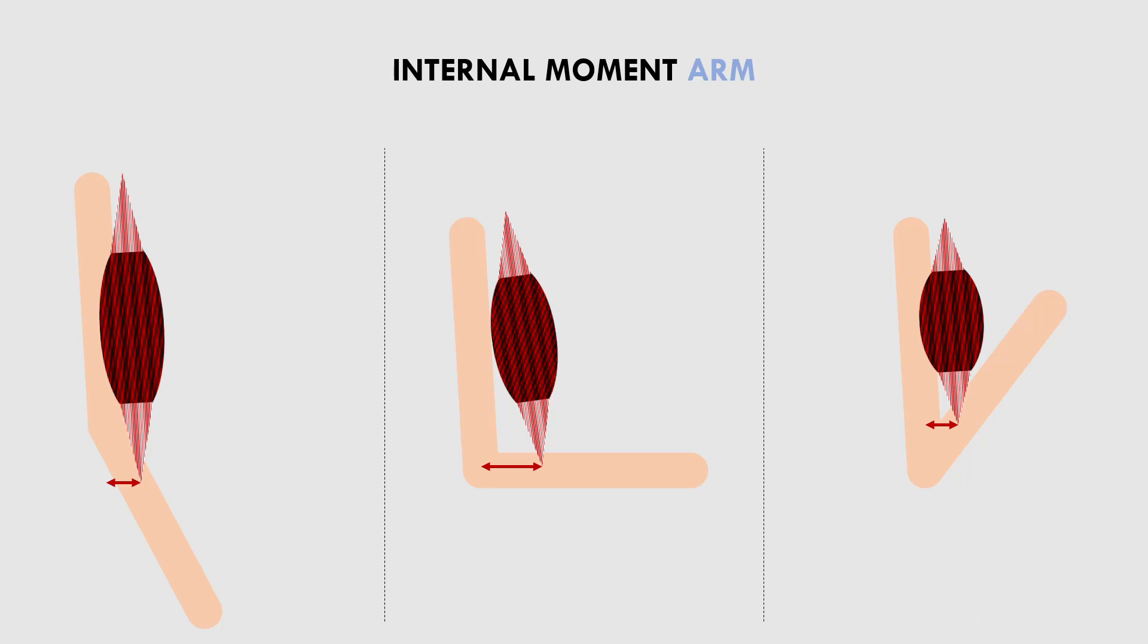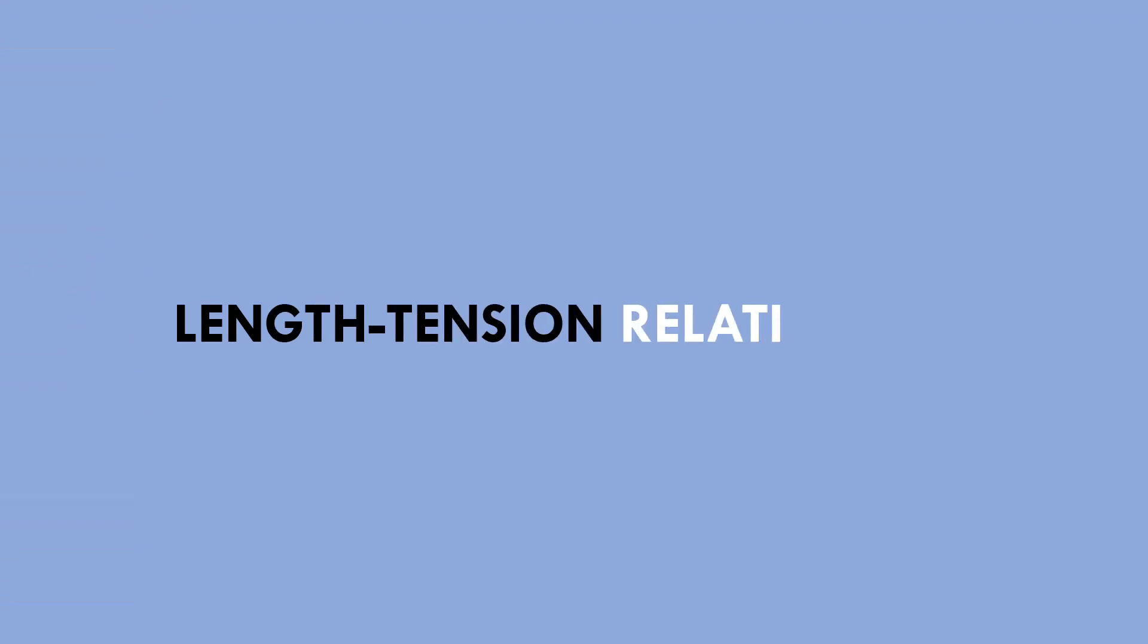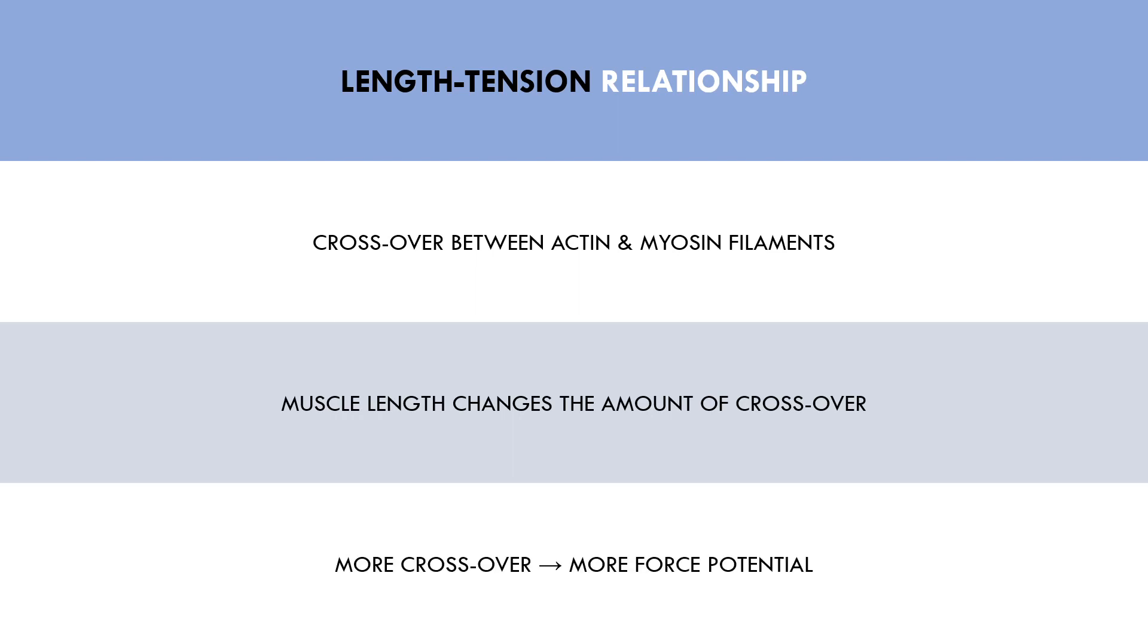And the last primary variable influencing tension curves is the length tension relationship. To summarize this phenomenon briefly, the length tension relationship refers to the crossover between actin and myosin. These are the smallest individual components of muscle which contribute to muscle contraction. The length of the muscle at any given point during a movement influences the amount of crossover between the actin and myosin filaments. There is an optimal muscle length which results in the maximum number of actin myosin cross bridges to form and therefore produce force.